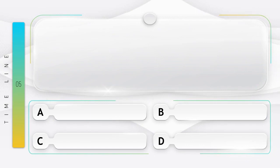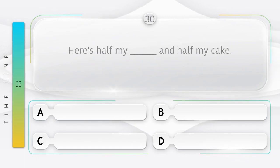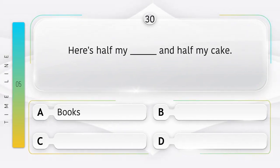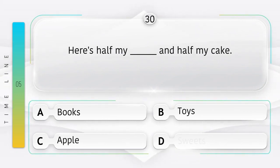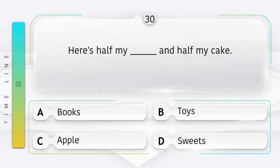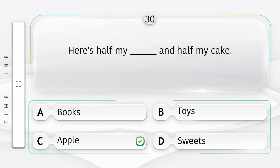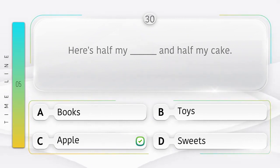Train. Here's half my ______ and half my cake. Option is A. Books. B. Toys. C. Apple. D. Sweets. Answer is option C. Apple.